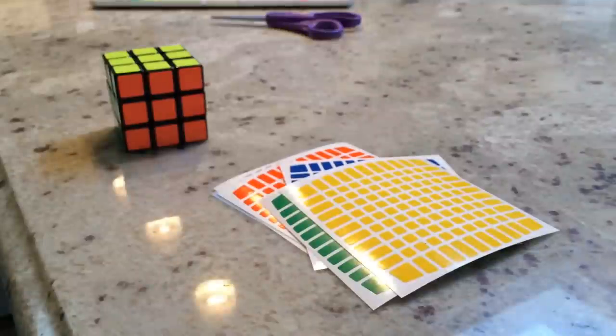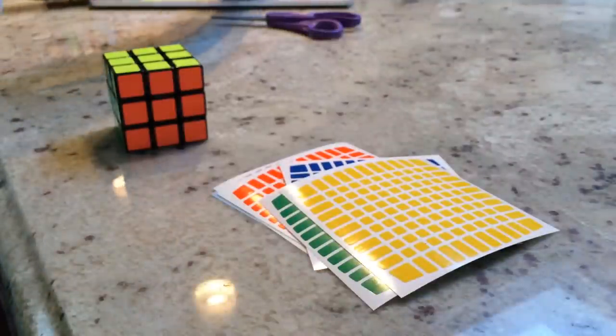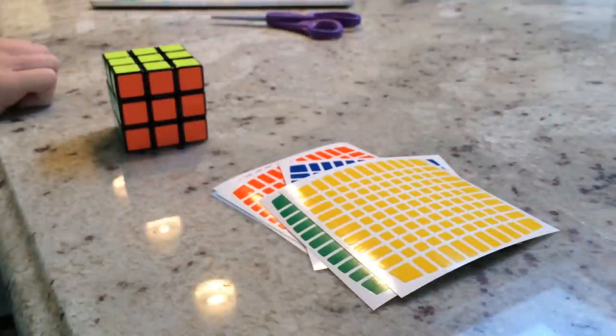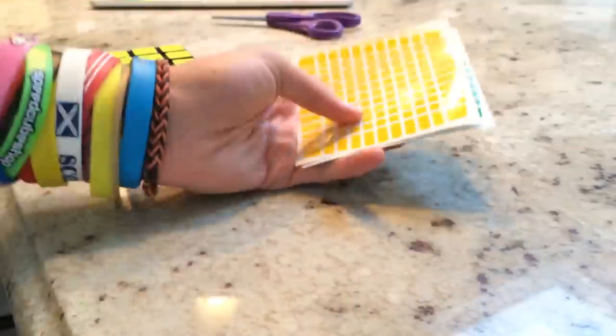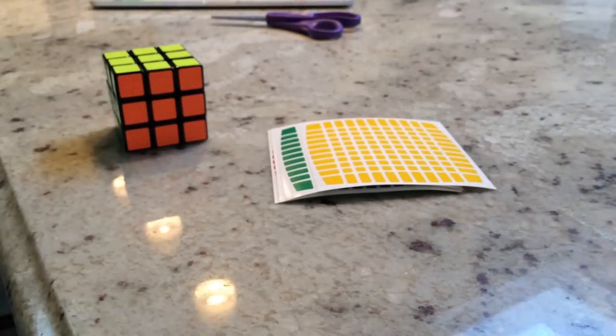So I have to do, let's just quickly do the math. I have to take off 726 stickers, and then put on 726 stickers onto my 11x11.